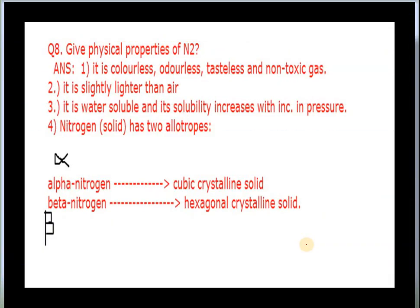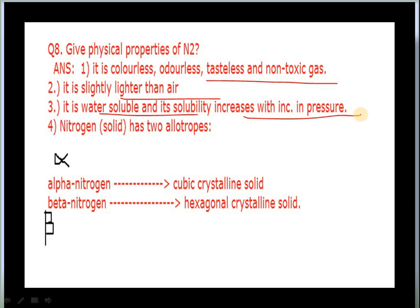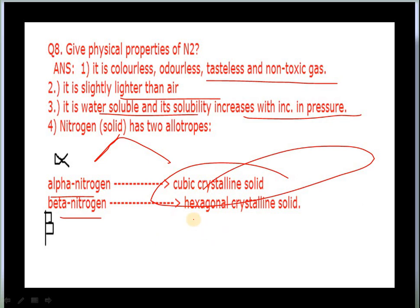Now, the physical properties of dinitrogen: it is a colorless, odorless, tasteless, and non-toxic gas. It is slightly lighter than air. It is soluble in water and its solubility increases with increase in pressure. Nitrogen has two allotropes in solid form: alpha nitrogen, which is a cubic crystalline solid, and beta nitrogen, which is a hexagonal crystalline solid.